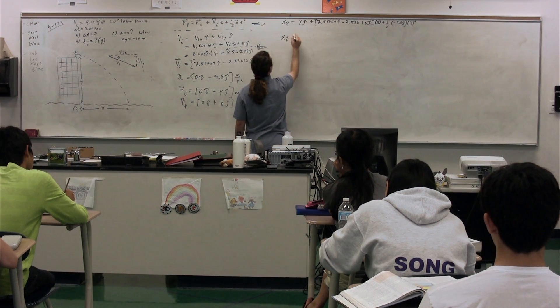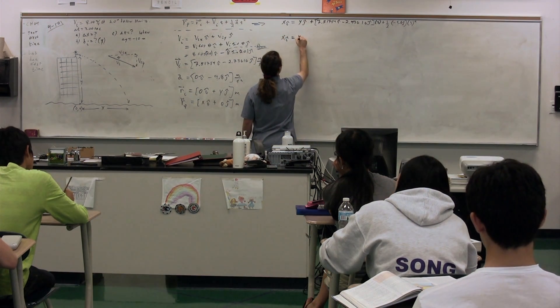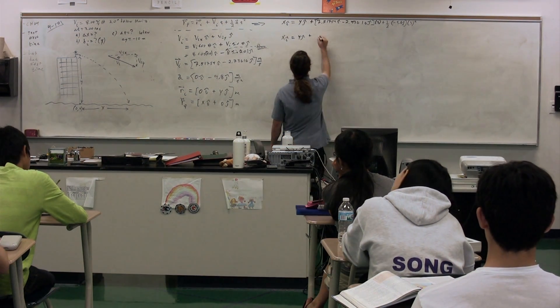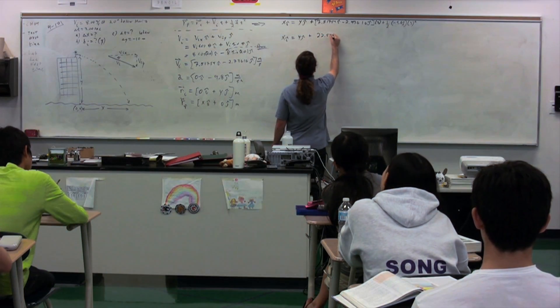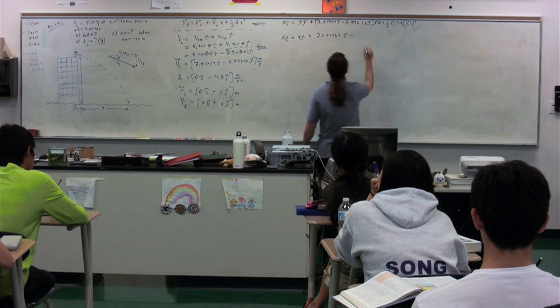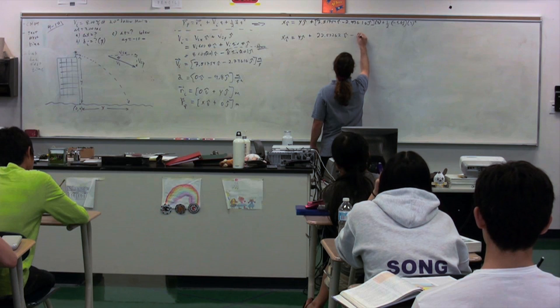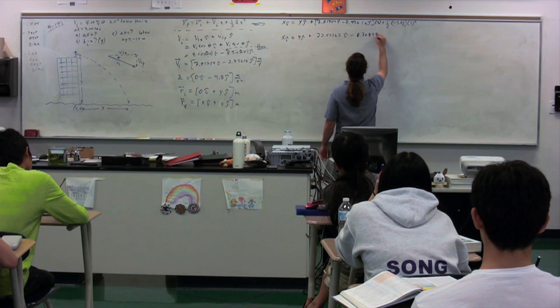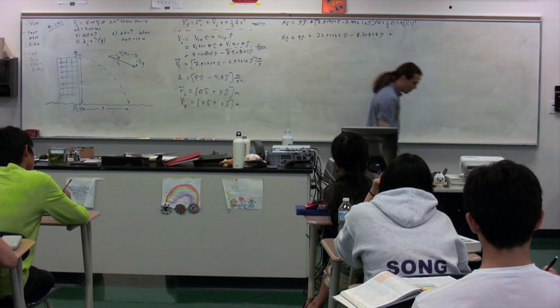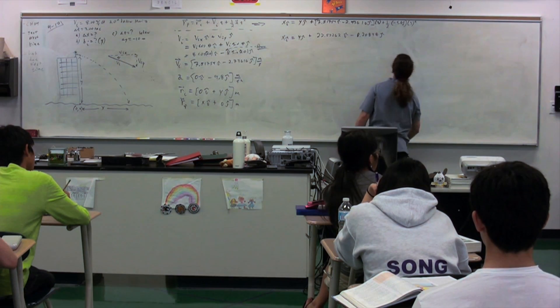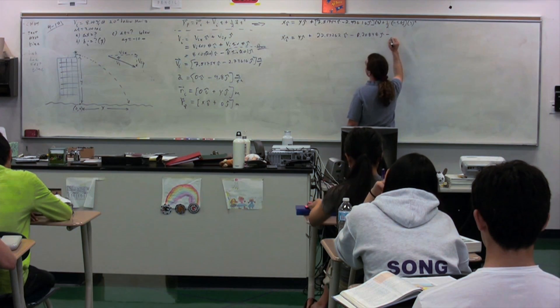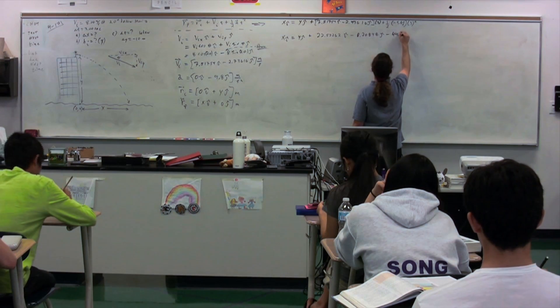So x i equals y j plus 7.51754 times 3, please. 22.55262. And that's i minus 2.73616 times 3. 8.20848. And that's j plus, no, minus one-half times 9.8 times 3 squared. Negative 44.1 j. 44.1 j.